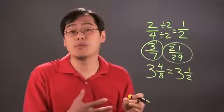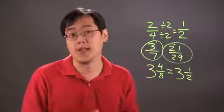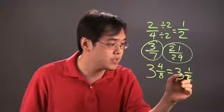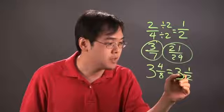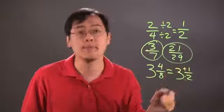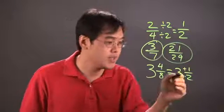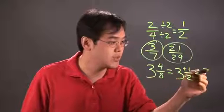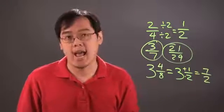But oftentimes if you want to convert to an improper fraction you can do that as well with a mixed number. And just to keep in mind you take the denominator, you multiply by the whole number, and then you add by the numerator. So two times three is six, add the one is seven, so three and one half is seven halves.